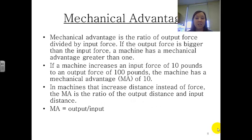Mechanical advantage is the ratio of an output force divided by the input force. If the output force is bigger than the input force, a machine has a mechanical advantage greater than one. This is what you want. Let me give you an example. If a machine increases an input force of ten pounds to an output force of a hundred pounds, then the machine has a mechanical advantage of ten. So that's a good thing. You only put ten pounds into this force, and it gave you a hundred pounds back? That's a really good mechanical advantage. That machine is working well.